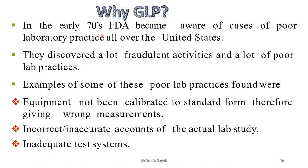In the early 1970s, the US FDA became aware of cases of poor laboratory practice all over the United States. They discovered a lot of fraudulent activities and poor lab practices — for example, equipment was not calibrated, lab data was not reported accurately, and testing systems were inadequate or not up to standard.